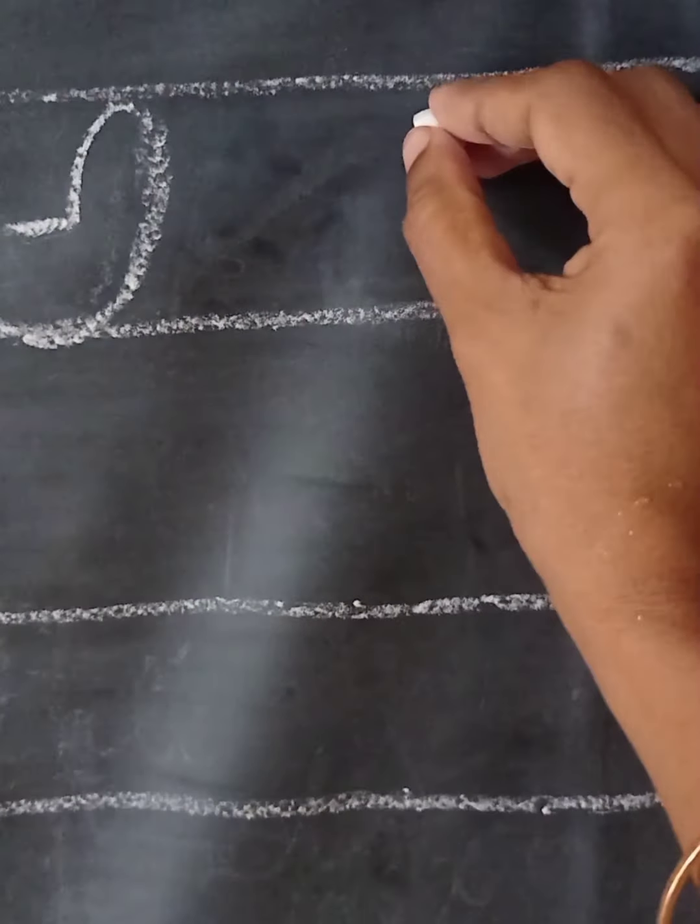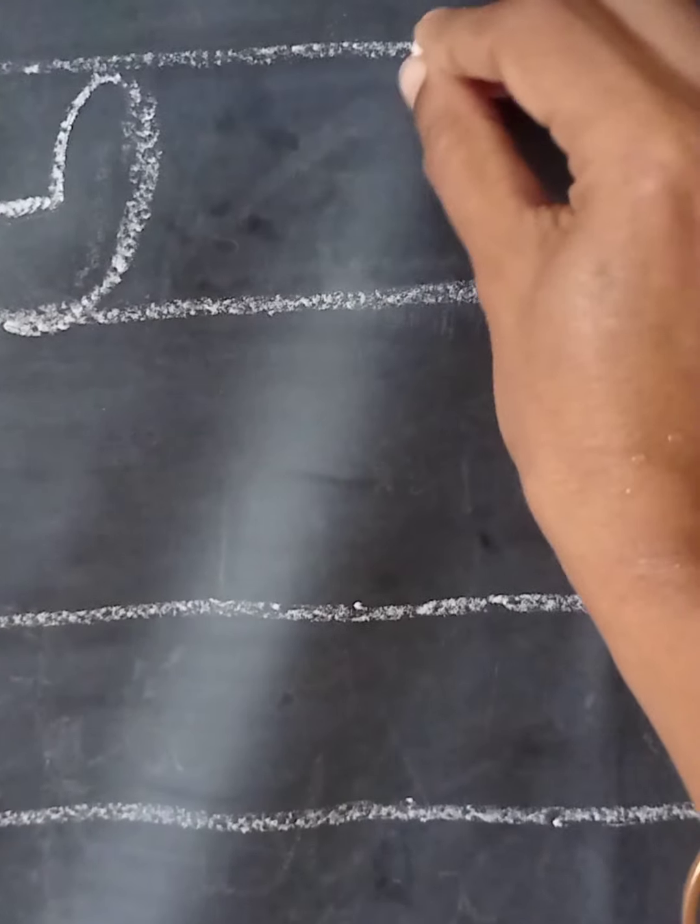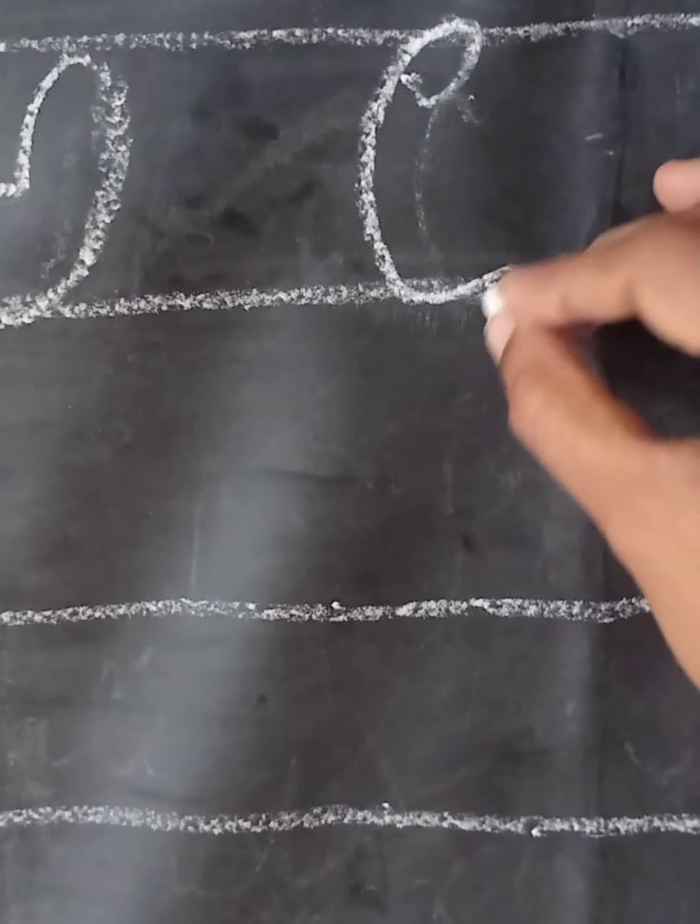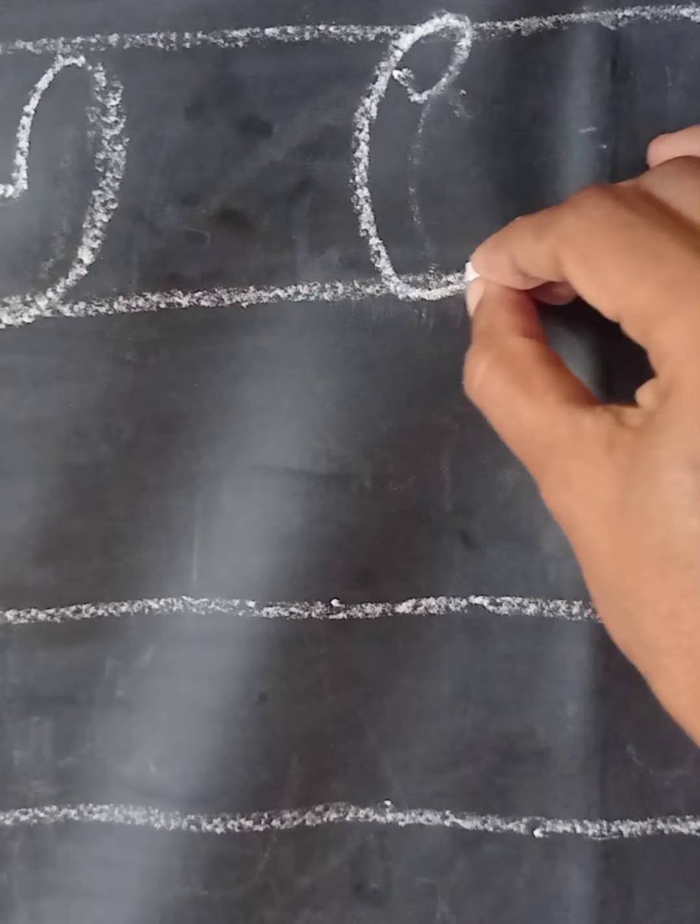The next would be Ā. Ā as in Ala. Ala meaning banyan tree.